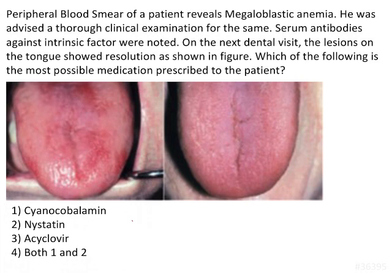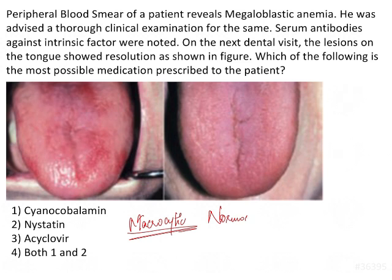Both megaloblastic and pernicious anemia present as macrocytic and normochromic anemia — meaning the hemoglobin level is normal but the RBCs are larger. For megaloblastic anemia, deficiency of vitamin B12 (cyanocobalamine) causes this condition. Vitamin B12 is the extrinsic factor, as opposed to the intrinsic factor which is produced by the oxyntic cells of the gastric mucosa. The intrinsic factor combines with the extrinsic factor, leading to absorption of vitamin B12 in the GIT.